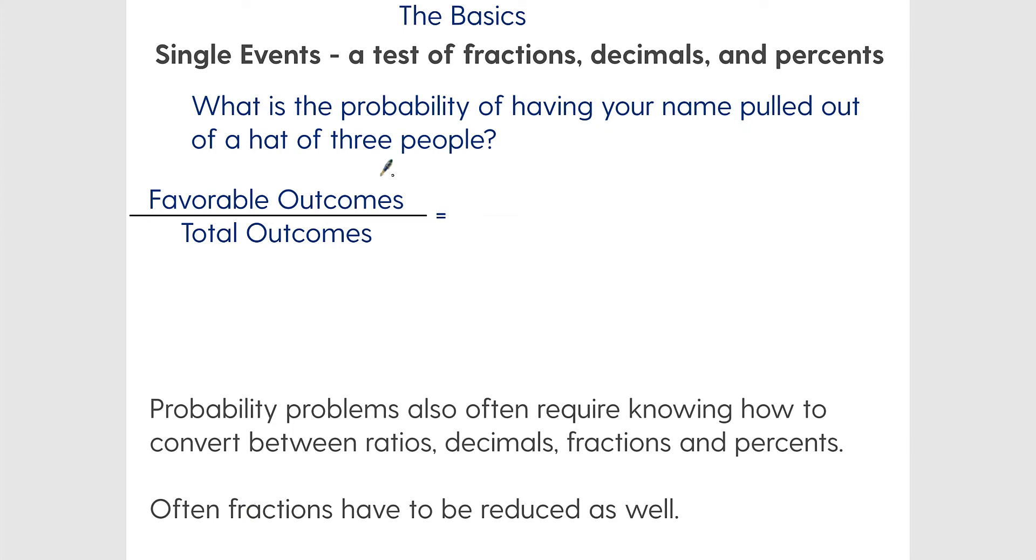That's the favorable outcome—you want your name to be drawn. There's only one of your names in there and three potential or total outcomes, so this one-third would be your probability. But what test makers are going to want to see is can you convert between a fraction to maybe a ratio like one to three, or even a decimal point three three, or even a percentage—you have a 33% chance of having your name drawn.